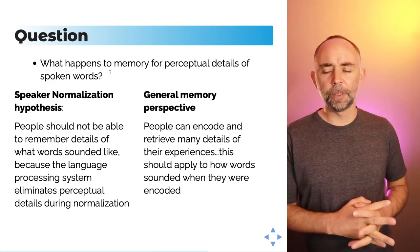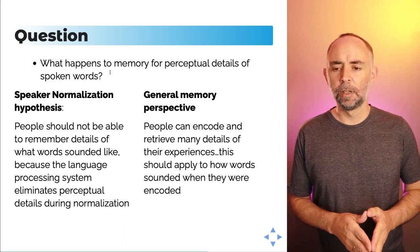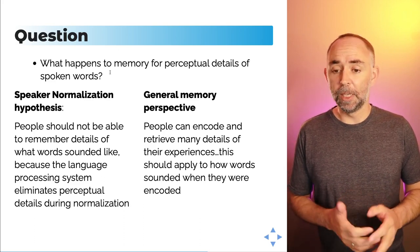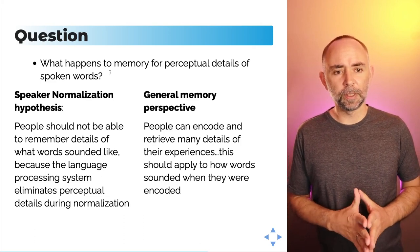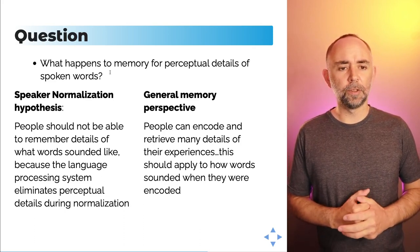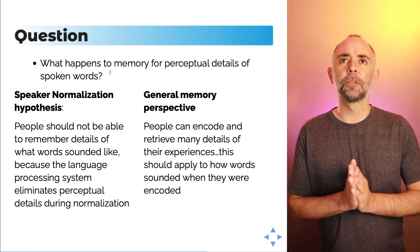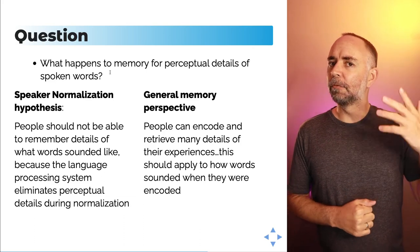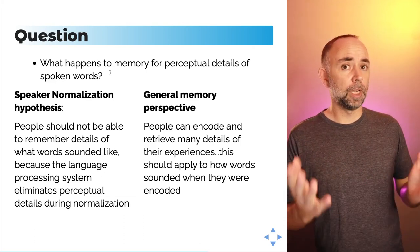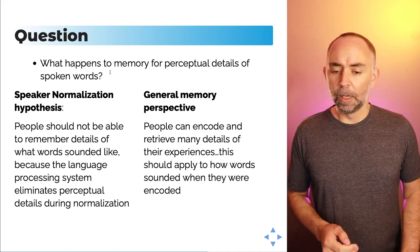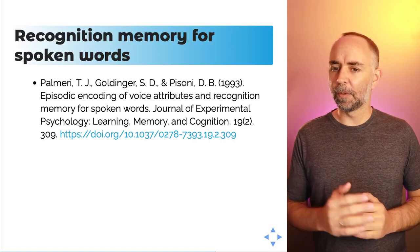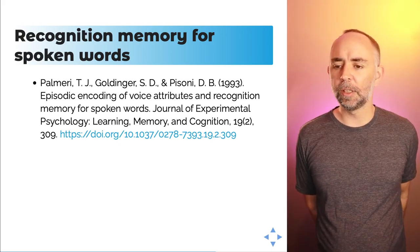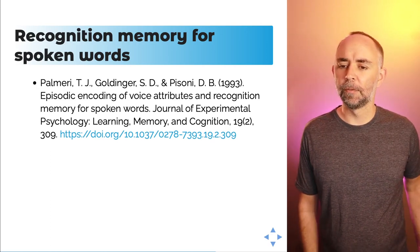One of the main assumptions of speaker normalization is that when your cognitive processes normalize the voice you're hearing, the perceptual details of the voice are filtered away, leaving only abstract word information. This can be tested. We could ask: what happens to memory for perceptual details of spoken words? According to the speaker normalization hypothesis, people should not be able to remember the details of what words sounded like, because the language processing system is supposedly eliminating these perceptual details during normalization. At the same time, from a general memory perspective, people can encode and retrieve many details — including perceptual details of their experiences — which should apply to how words sounded when encoded. These questions were asked in a 1993 paper by Palmieri, Goldinger, and Pisoni, titled 'Episodic Encoding of Voice Attributes and Recognition Memory for Spoken Words.'